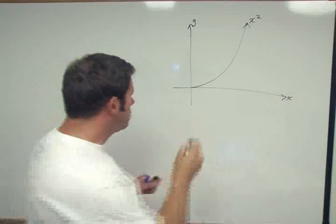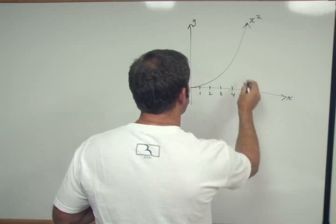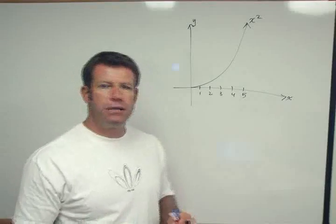So here's x squared, and now we're just going to mark it off. Here's 1, 2, 3, 4, 5, and we're just going to do it in equal intervals.